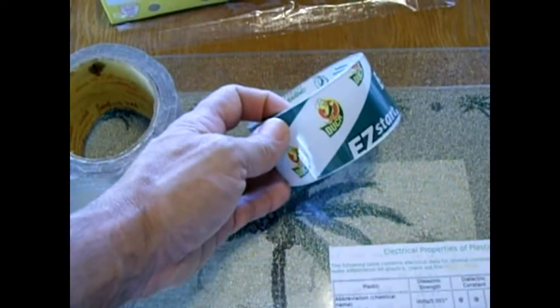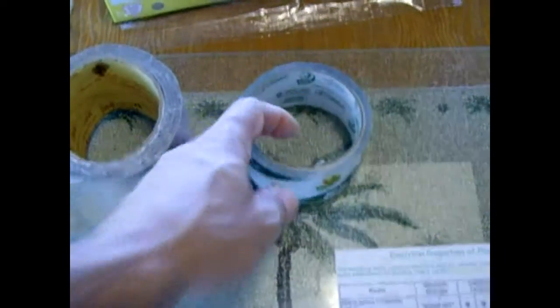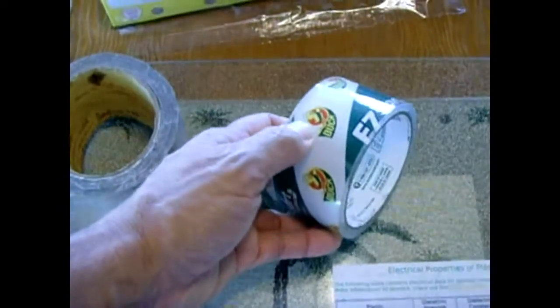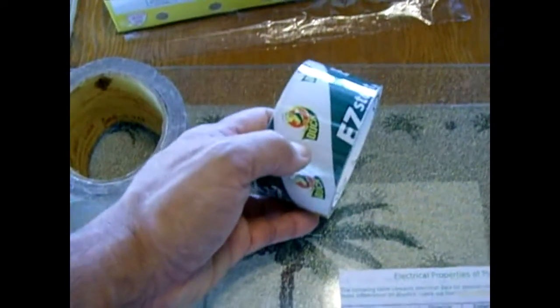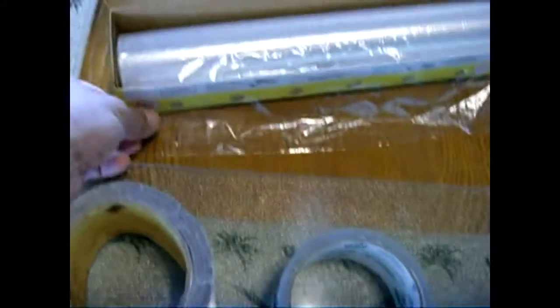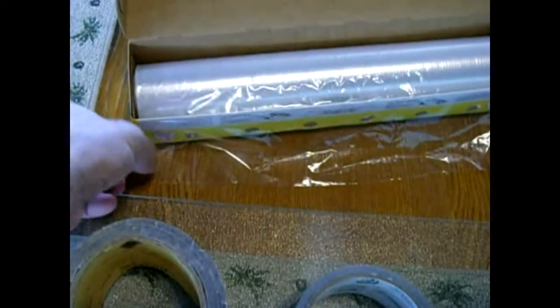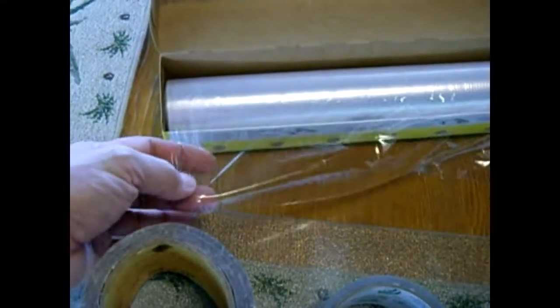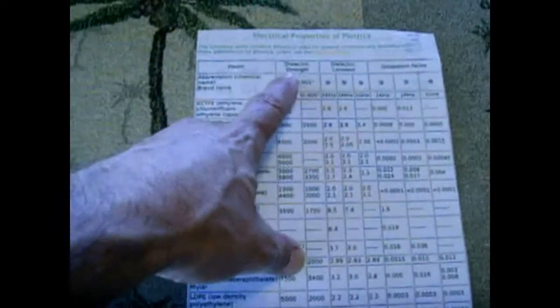Now the thicker the material, the higher the breakdown voltage. So this polyethylene tape at 2.6 mils can handle a lot more voltage than the saran wrap which is 0.6 mil polyethylene. There's a chart that I will put in the video description box that outlines the properties of plastics and the dielectric strength.